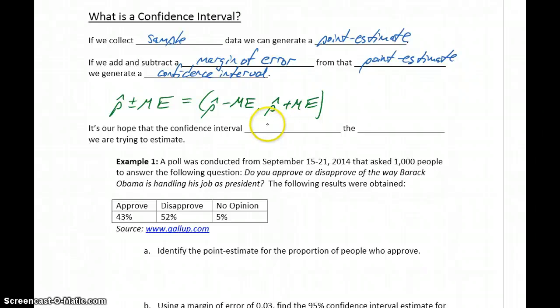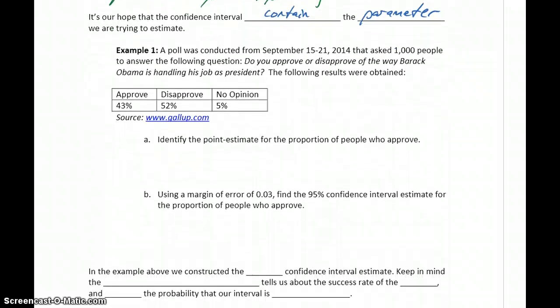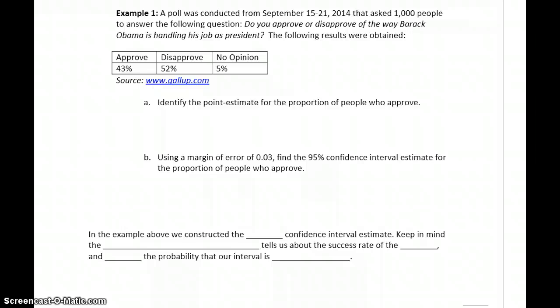It's our hope that that confidence interval will contain the actual population parameter that we're trying to estimate. But keep in mind, it's something that we'll never know for sure. We're trying to make estimates, best possible guesses, but in the end, we'll never have a definitive answer whether or not we came up with the correct solution or the correct conclusion.